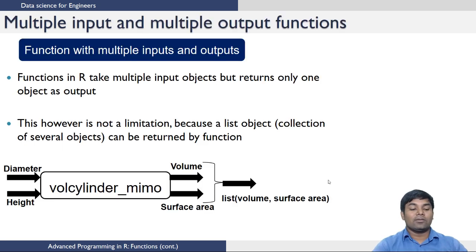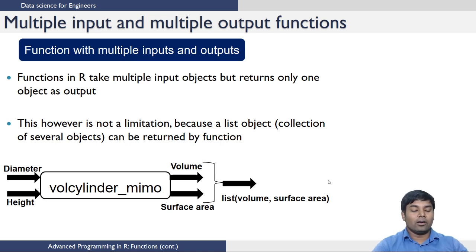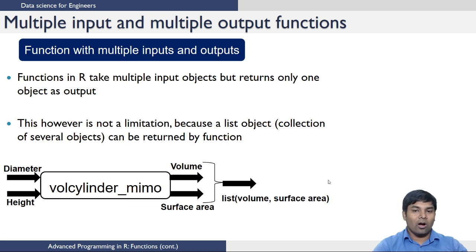Let us see functions with multiple inputs and multiple outputs. Functions in R take multiple input objects but return only one object as output. However, this is not a limitation because you can create a list of all the outputs you want, and once the list is returned you can access the individual elements of the list to get the answers you want.